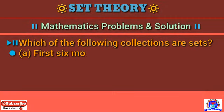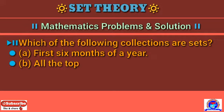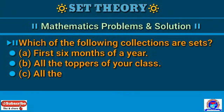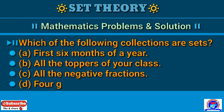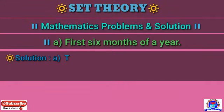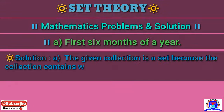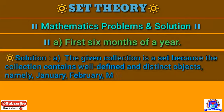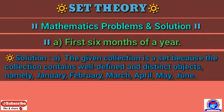Now let's look at some examples. Which of the following collections are sets? Number A: the first six months of a year. Number B: all the toppers of your class. Number C: all the negative fractions. Number D: the four good cricket players of India. Solution for A: the given collection is a set because it contains well-defined and distinct objects, namely January, February, March, April, May, June.